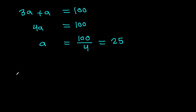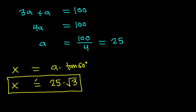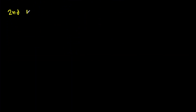And we have x is A times tan 60 degrees. So x will be 25 times tan 60 degrees, which is root 3. So x is 25 root 3. And the second method.